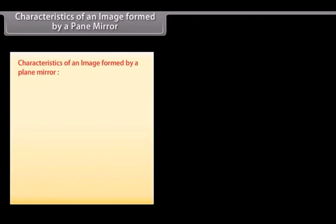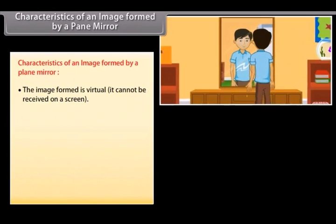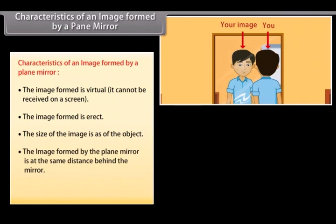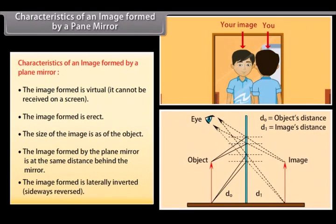Characteristics of an image formed by a plane mirror: the image formed is virtual, it cannot be received on a screen. The image formed is erect. The size of the image is the same as the object. The image formed by the plane mirror is at the same distance behind the mirror. The image formed is laterally inverted, sideways reversed.